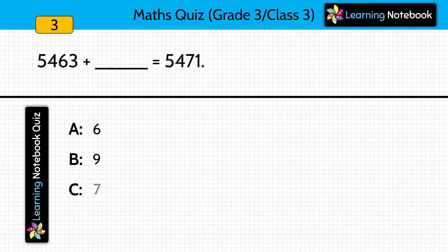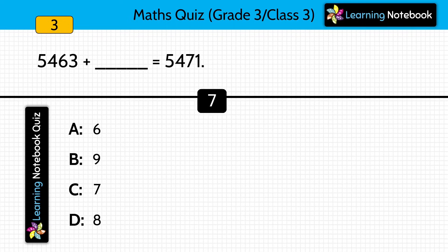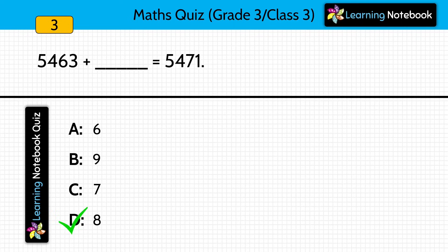Question three: 5,463 plus blank equals 5,471. What should be added to 5,463 to get the answer as 5,471? Answer is 8 — 5,463 plus 8 equals 5,471.